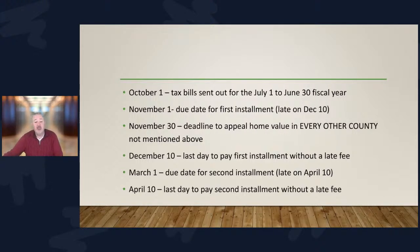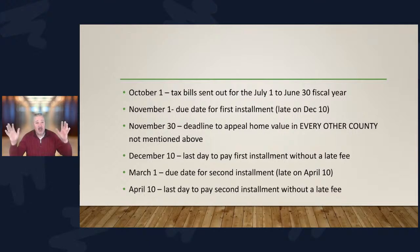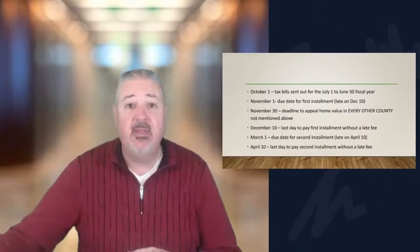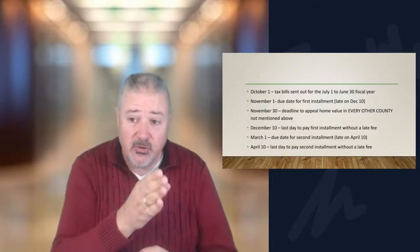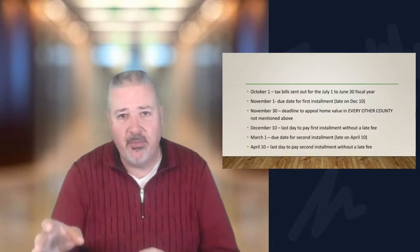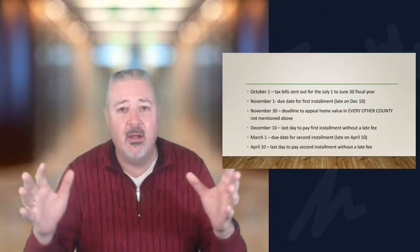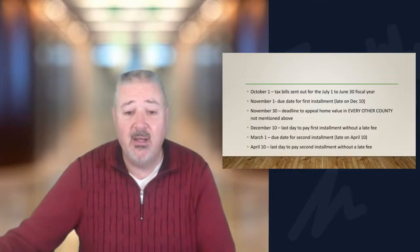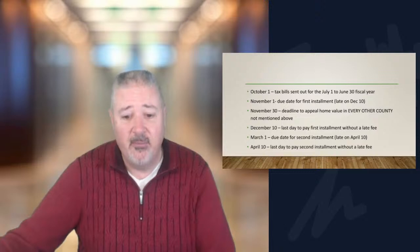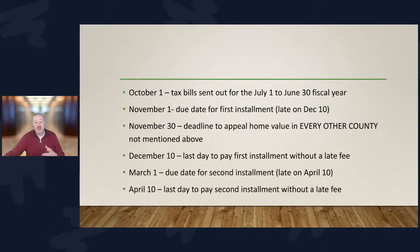November 30th is the deadline to appeal your home value in every other county not mentioned above. December 10th is the last day to pay the first installment without a late fee. Your second installment — they take the entire tax bill and cut it in half — is due on March 1st and late on April 10th. The same 40-day grace period applies. You have to have your property taxes paid by April 10th.